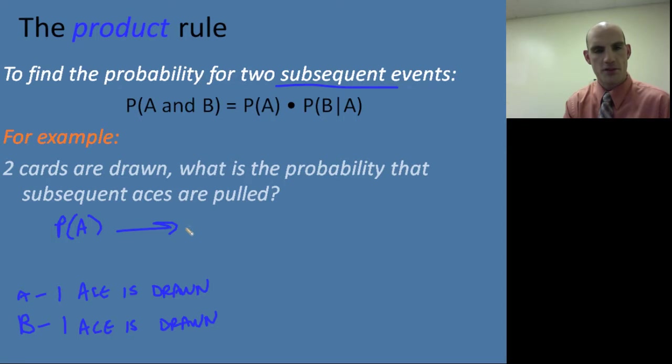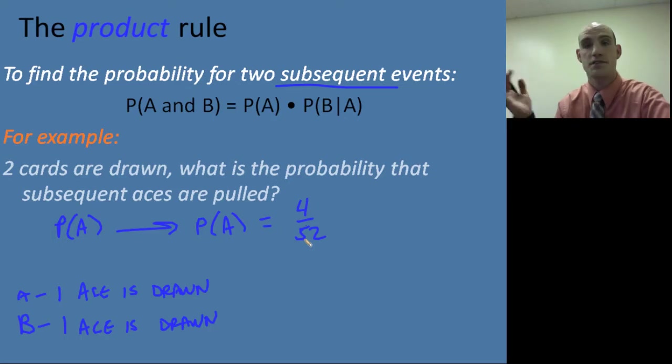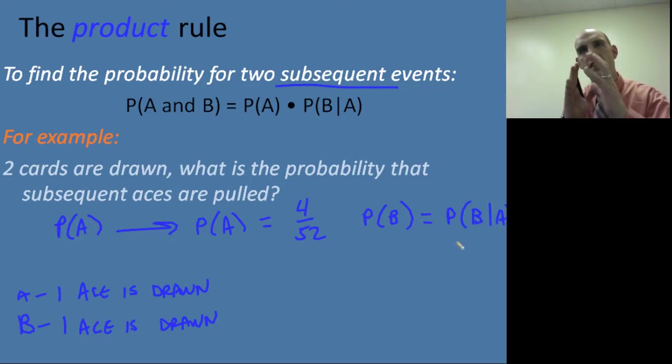Well, the probability that the first one happens, the probability that A happens is four aces out of 52 cards. Because we have four aces, okay? And there's 52 in a deck. But the probability of B happening is really equal to the probability of B given that A. Because given that A happens, what's the probability of B happening? Which is really saying, if I pull out that ace, how has my probability changed? Well, now that I've pulled out one ace, I only have three aces left.